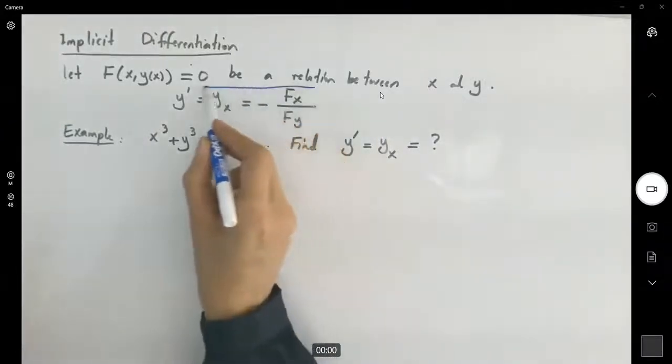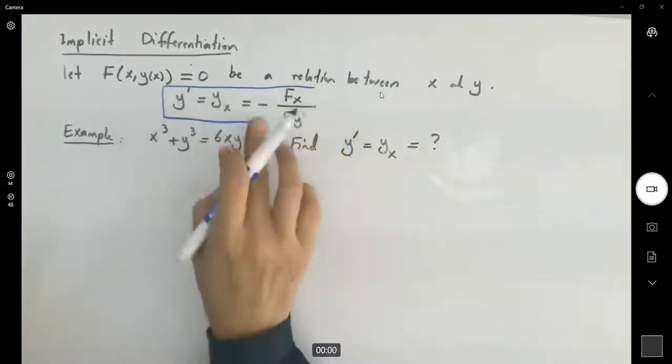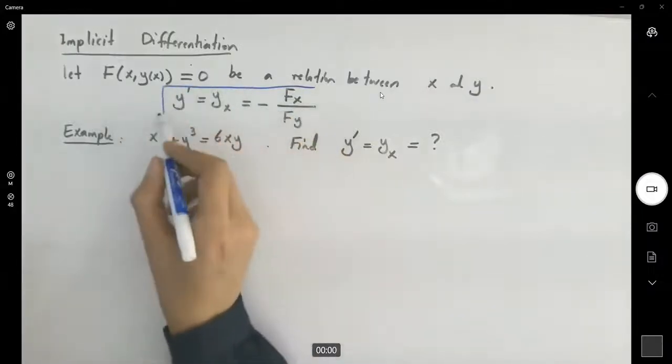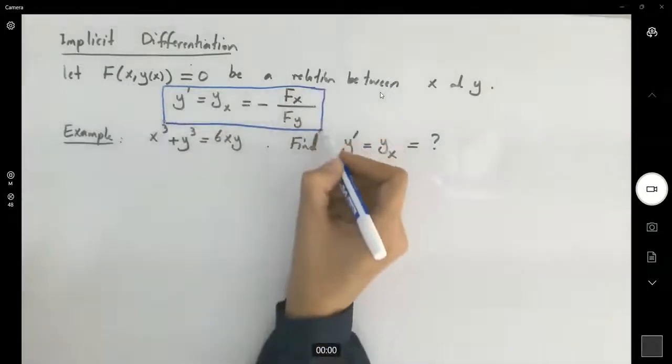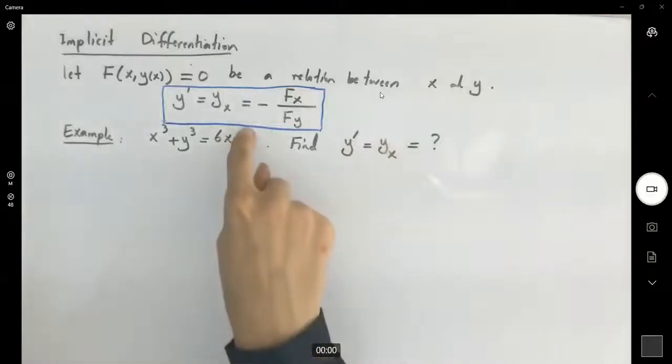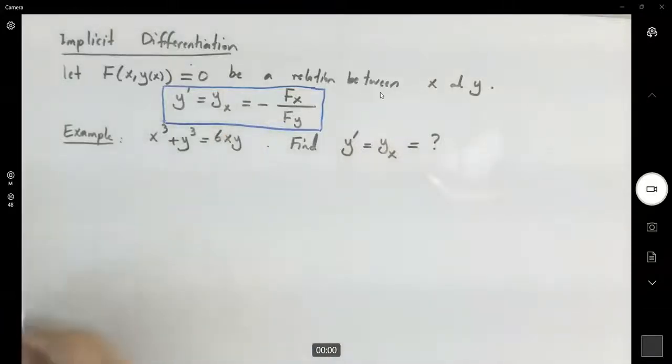You have a combination of variables x and y. If you can isolate y on one side, then feel free to go ahead and just take the derivative. If not, we're going to apply implicit differentiation.